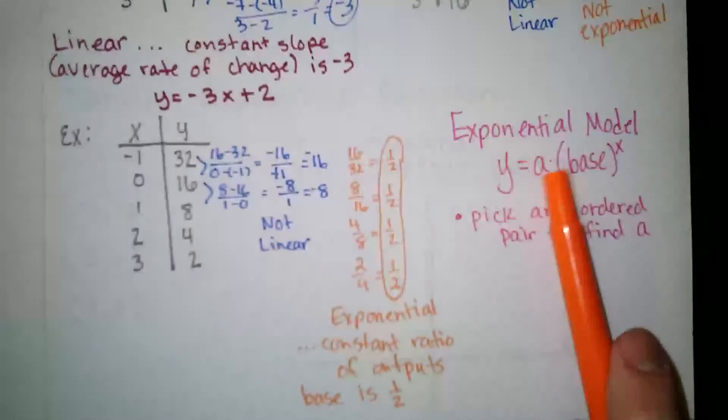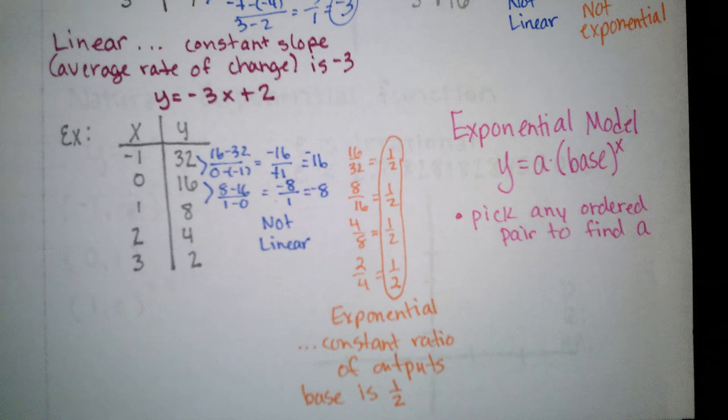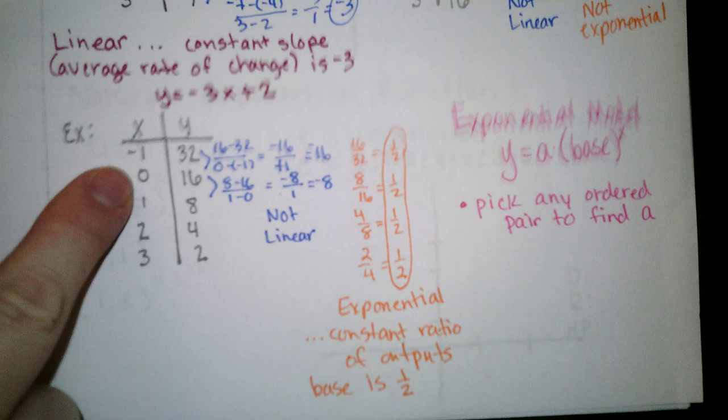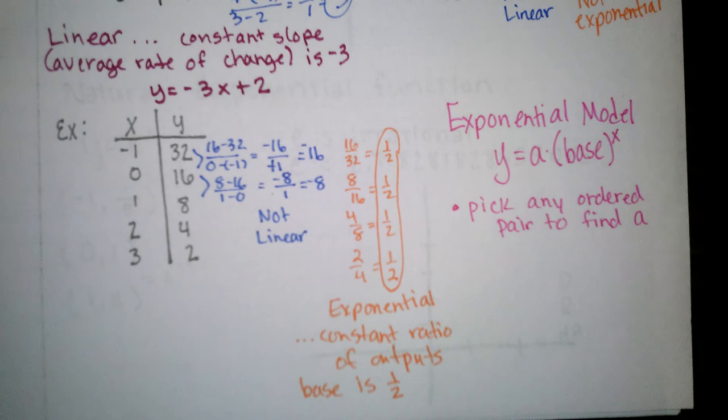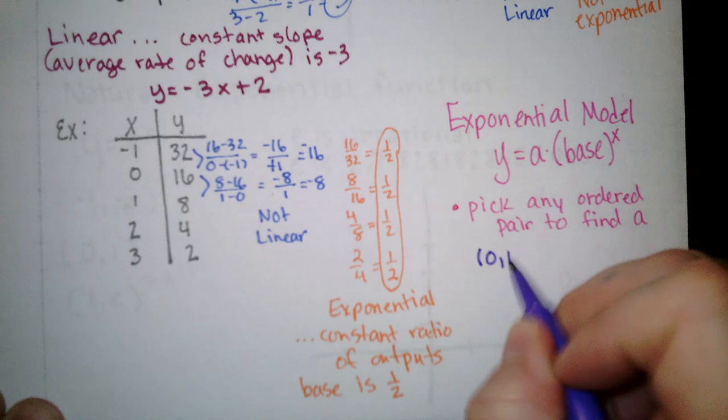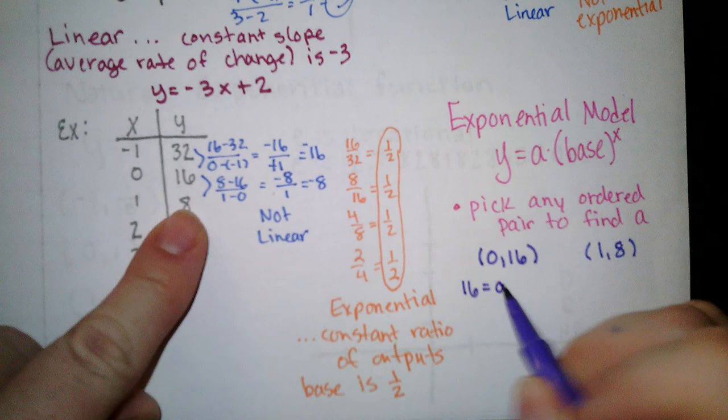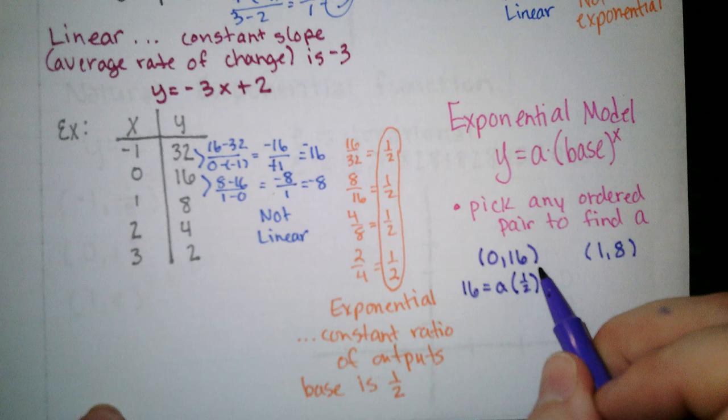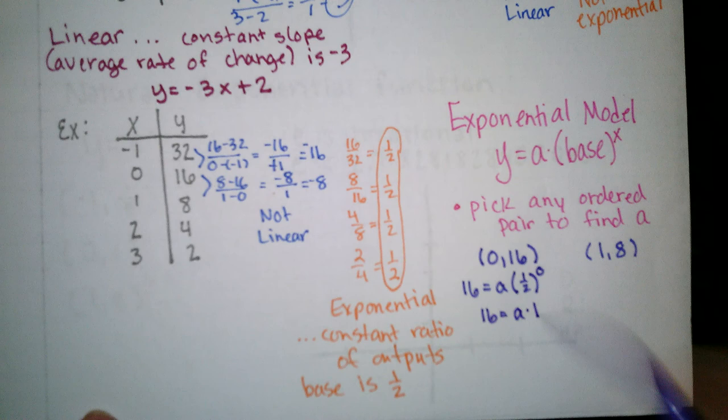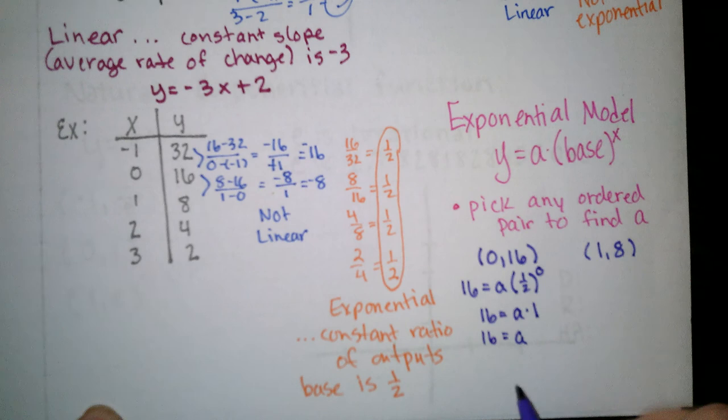So we'll take the y value equals a times 1 half to the power of whatever we choose for x. A convenient one to choose is 0 for x or 1. Either 0 or 1 are good choices. So let me choose 0, 16. If I put 16 in for y, a is what I'm solving for. The base is 1 half and the x coordinate is 0. Well, 1 half to the 0 power is 1. So I've already solved for a, which is 16. So when I rewrite my model, it will be y equals 16 times 1 half to the x power.